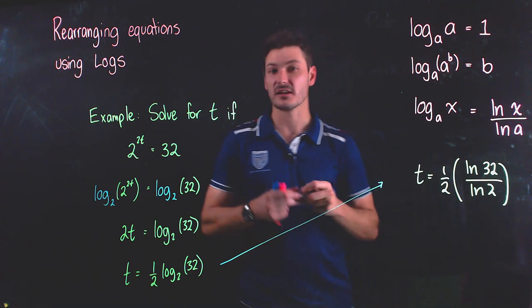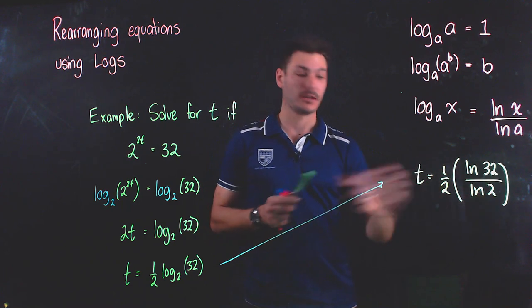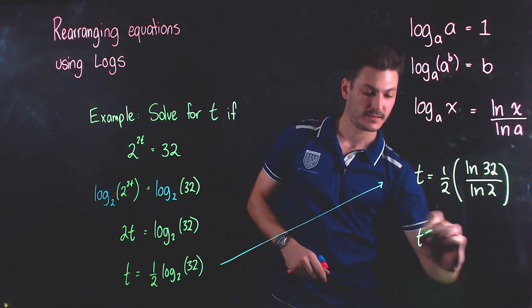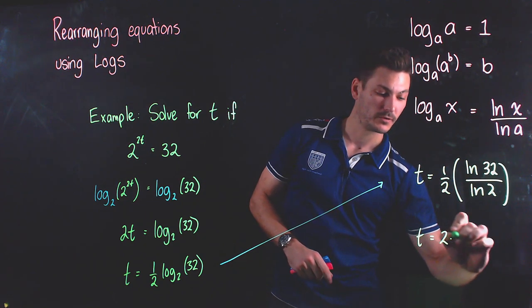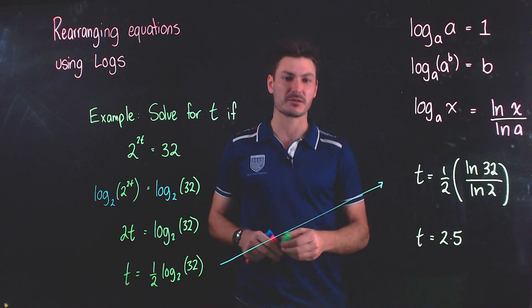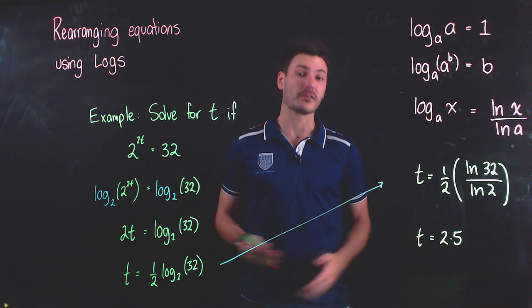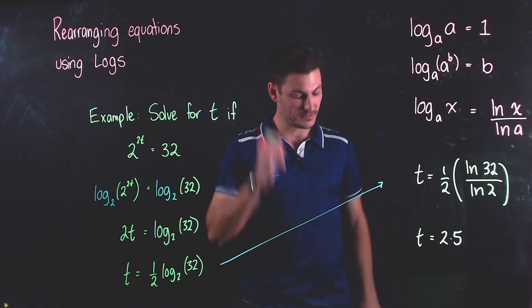And now, because my regular scientific calculator can do this, if I put this whole expression in my calculator, it spits out that t is equal to 2.5. And so if say, for example, t was in hours, I might say it'll take 2.5 hours for so and so, whatever the context of the question is.